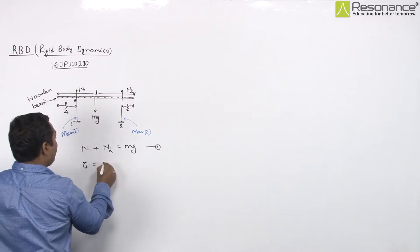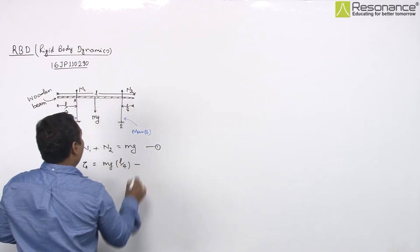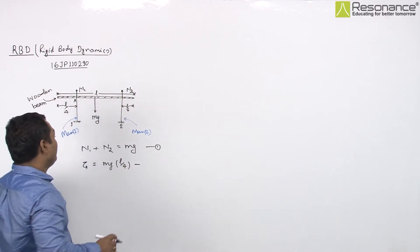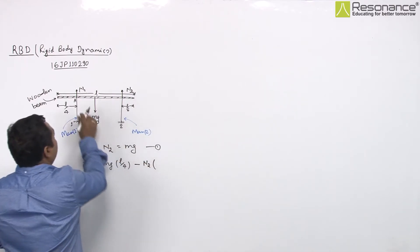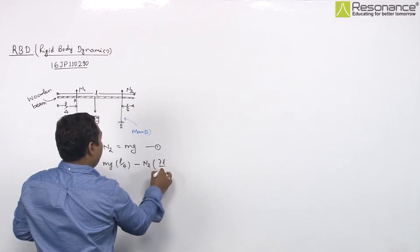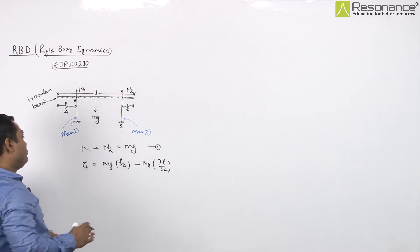It will be Mg multiplied with L/4 minus torque due to N2, and this will be N2 multiplied with L/4 plus this length which is 7L/12. And this torque must be equal to 0.